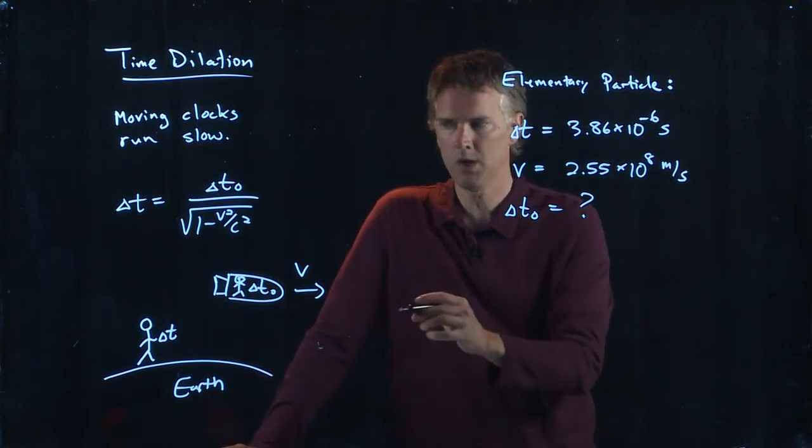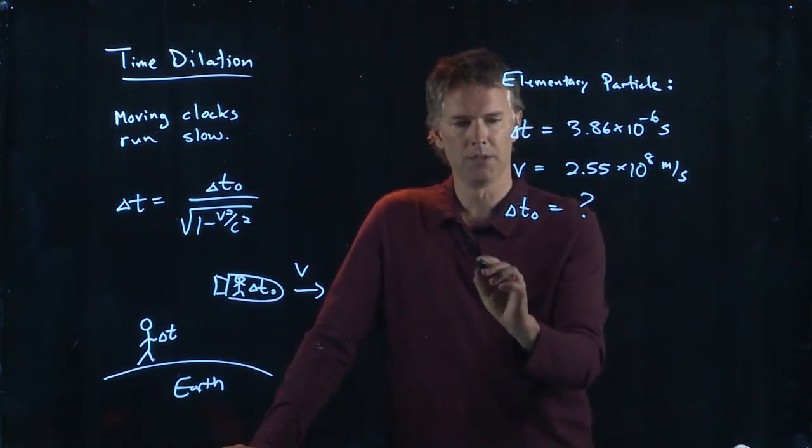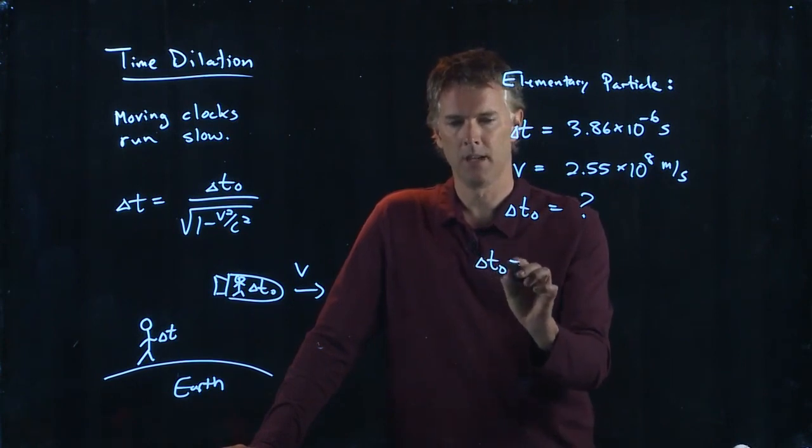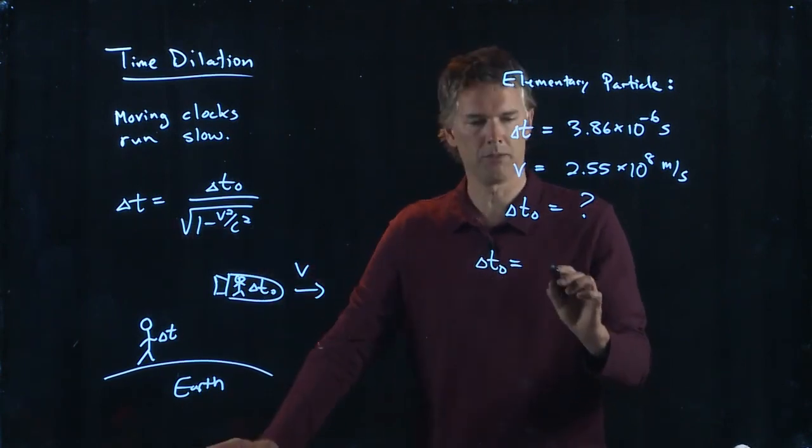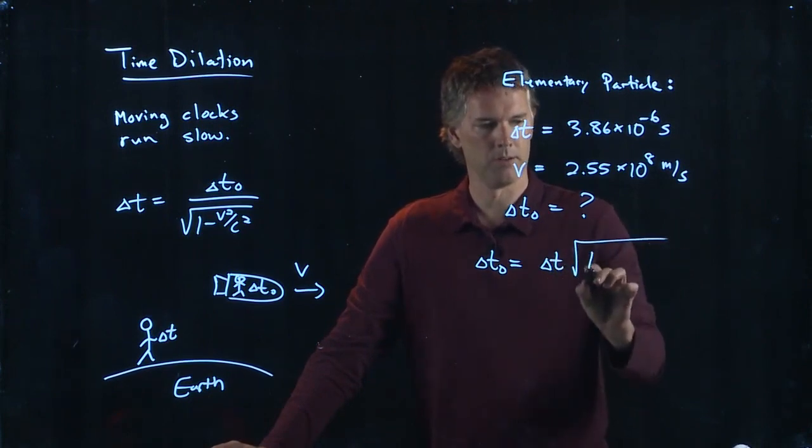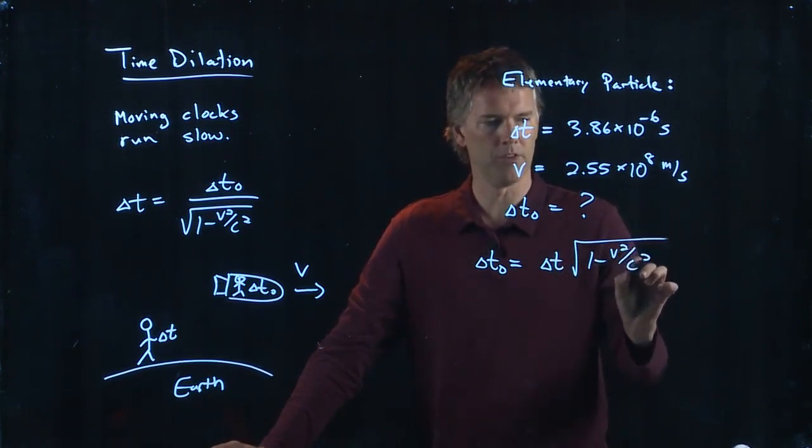It almost looks like we have everything we need. We just need to take this equation and solve for Delta T naught. So Delta T naught is going to be, if I just multiply across by this square root, that should do it: Delta T times the square root of 1 minus v squared over c squared.